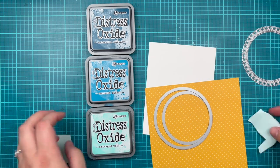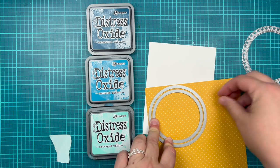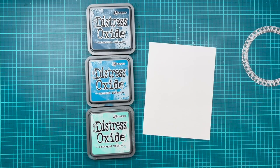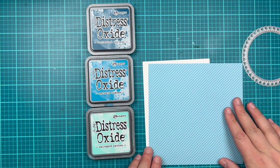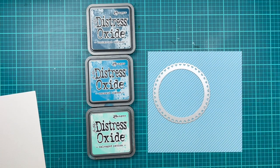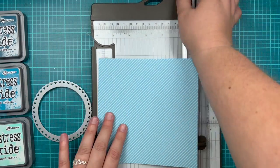First up, I'm going to create my frame. So again, I should have used one more larger circle and you'll see why in a moment, but that's okay. I'm going to go with it and keep creating my card. And then for the blue, I want to cut it to match my A2 size. So it's going to be four and a quarter by five and a half. So I'll just grab my paper trimmer and trim that down.